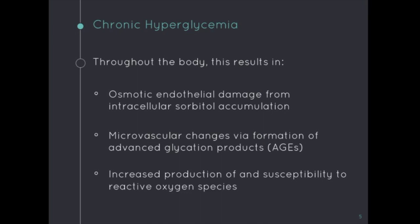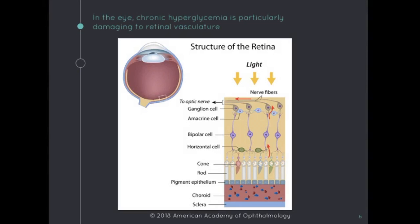In the eye, chronic hyperglycemia primarily affects the retina's dense vasculature, which supplies nutrients and oxygen to the complex network of specialized neural cells that process and transmit visual information to the brain via the optic nerve. This hyperglycemia-induced damage leads to microvascular wall weakening and ischemia, which ultimately causes visual deficits. We will talk about the characteristic fundoscopic findings later on.